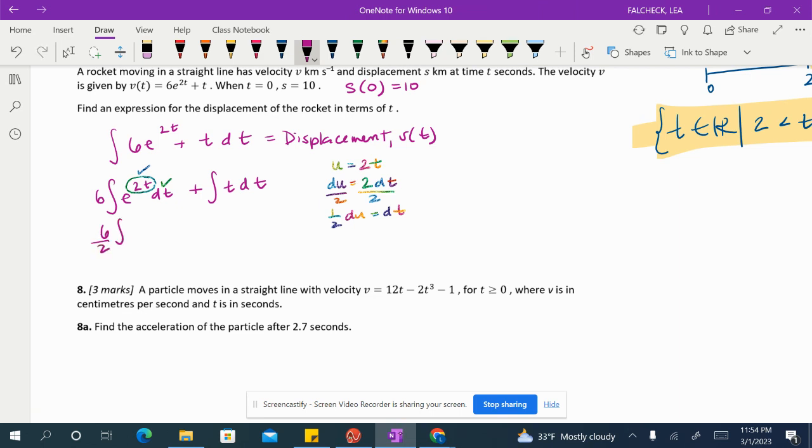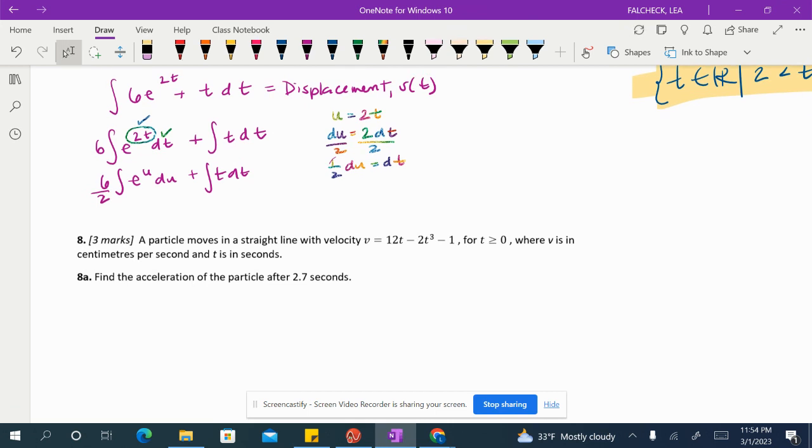There's a divided by 2 out front from this guy here. And then the antiderivative here or the integral here is just going to be e^U du. And then we still have not integrated this guy yet. So now we integrate and we would just get 3e^U plus T squared over 2 plus C. Let's go back and put that 2T in for the U. And we would get 3e^(2T) plus T squared over 2.